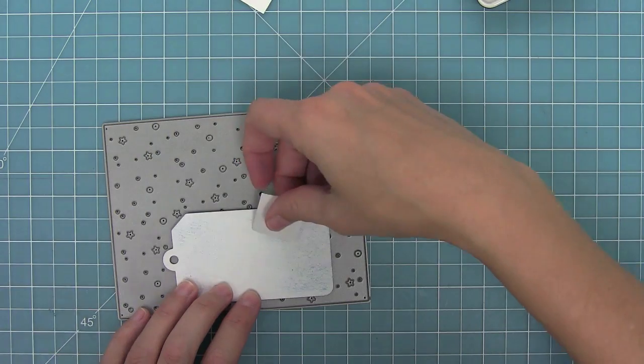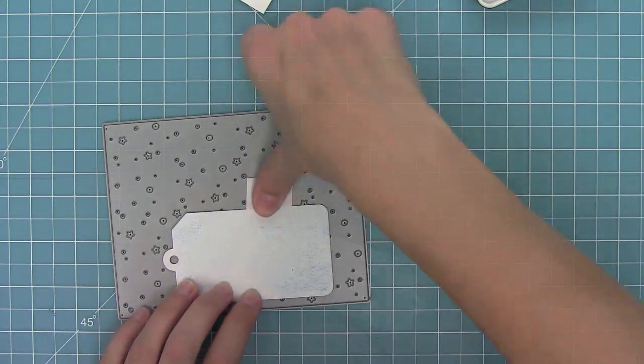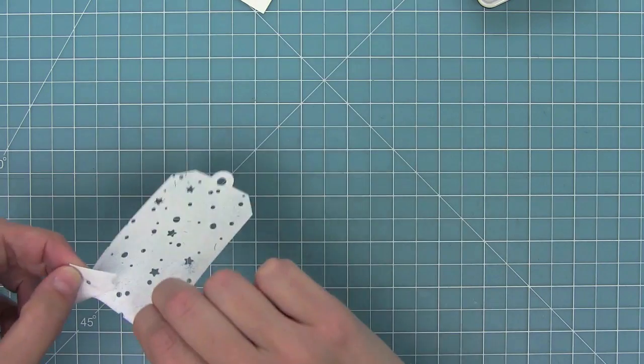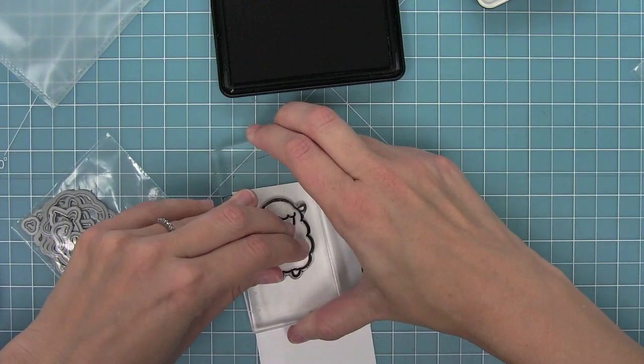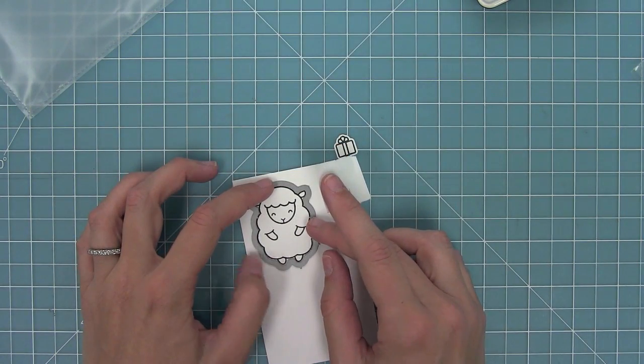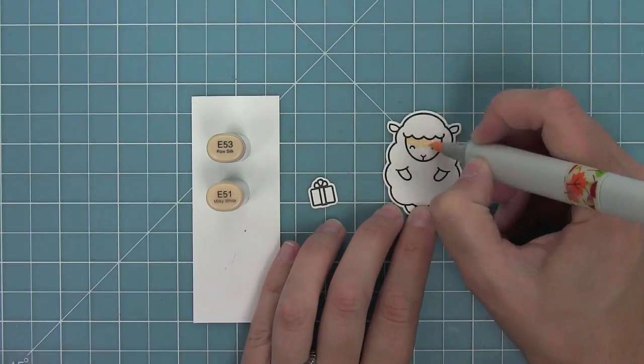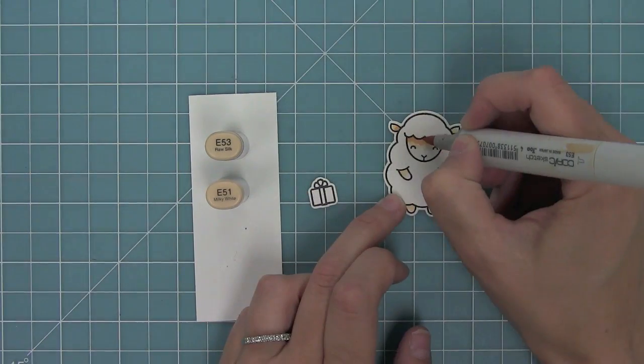Now that my tag is all done I'm going to die cut it with my snowy backdrop. And I'm lining it up to make sure that the die doesn't cut the top tag part because I want to make sure I can still string through that. Now I'm going to run it through my die cut machine and now I'm going to have all those cute stars and snowfalls cut out of it. Now here I'm using Bah Humbug, one of my favorite Christmas sets, and I've cut both the present and the sheep there out with my dies.